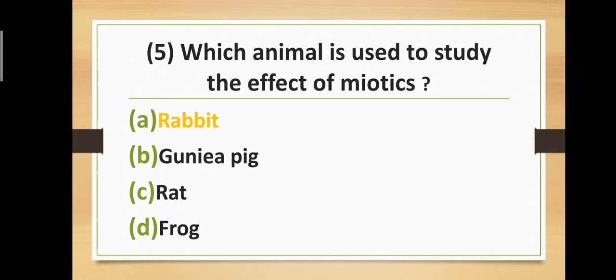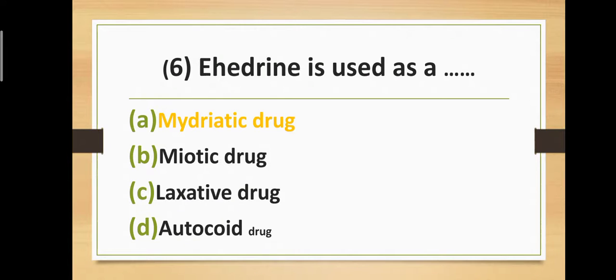Question five: Which animal is used to study the effect of miotics? Option A: Rabbit. Option B: Guinea pig. Option C: Rat. Option D: Frog. Correct answer is Option A — Rabbit. Rabbit is used to study the effect of miotics.